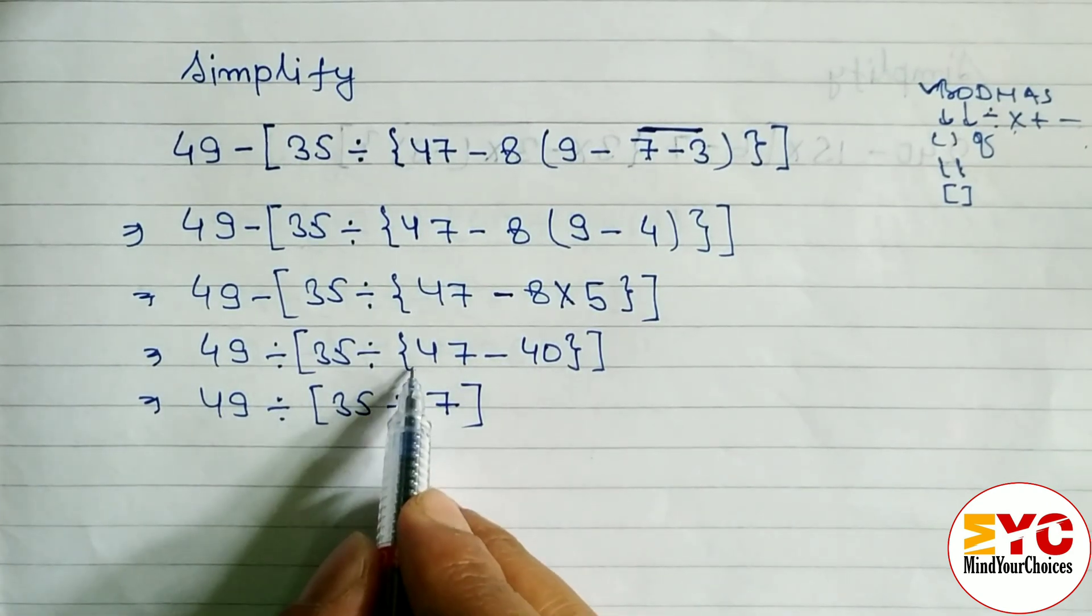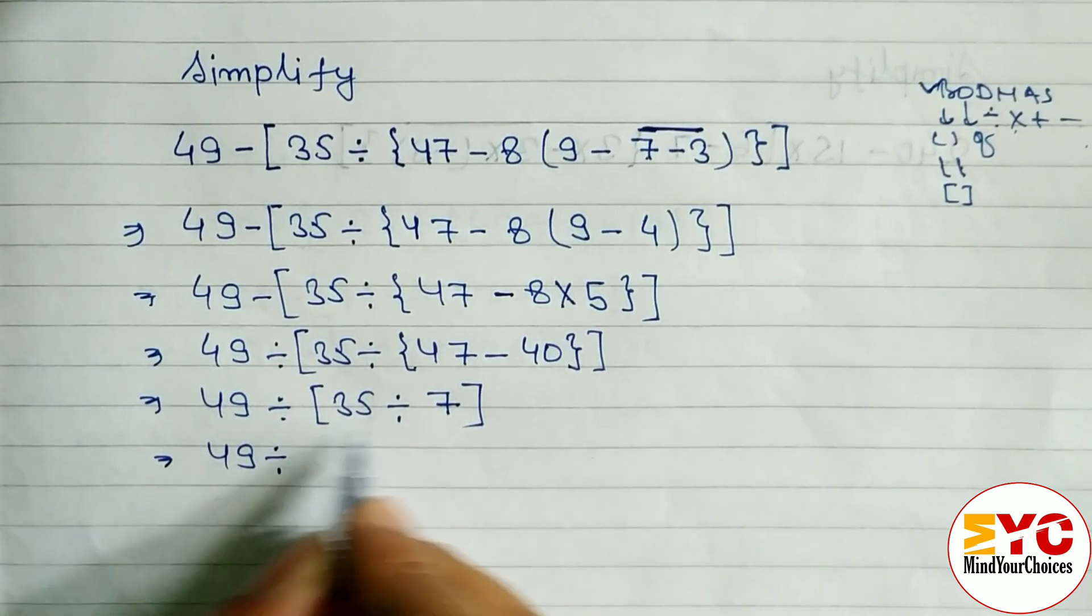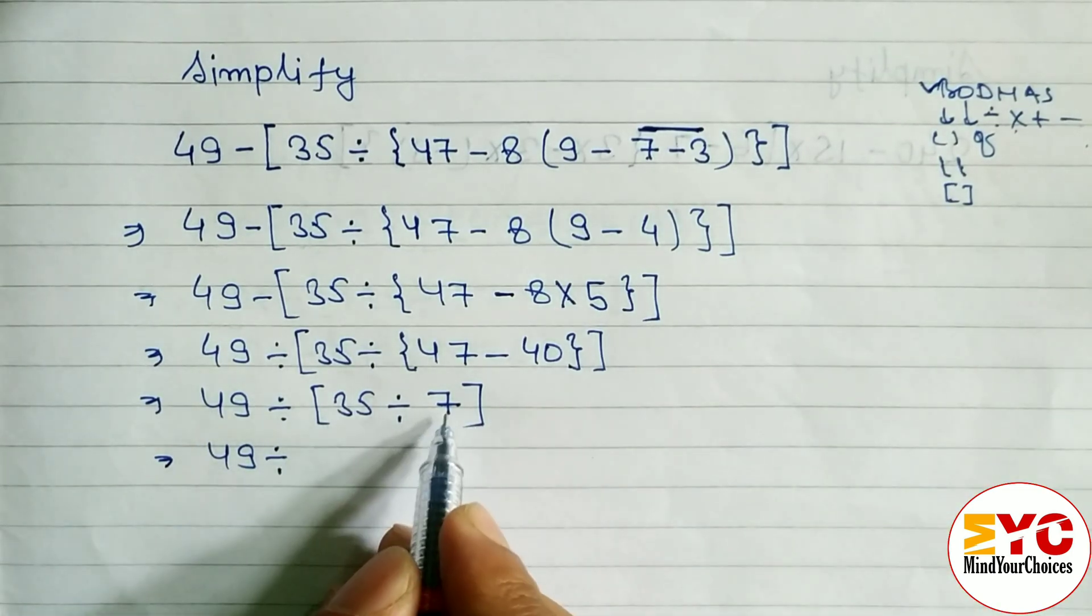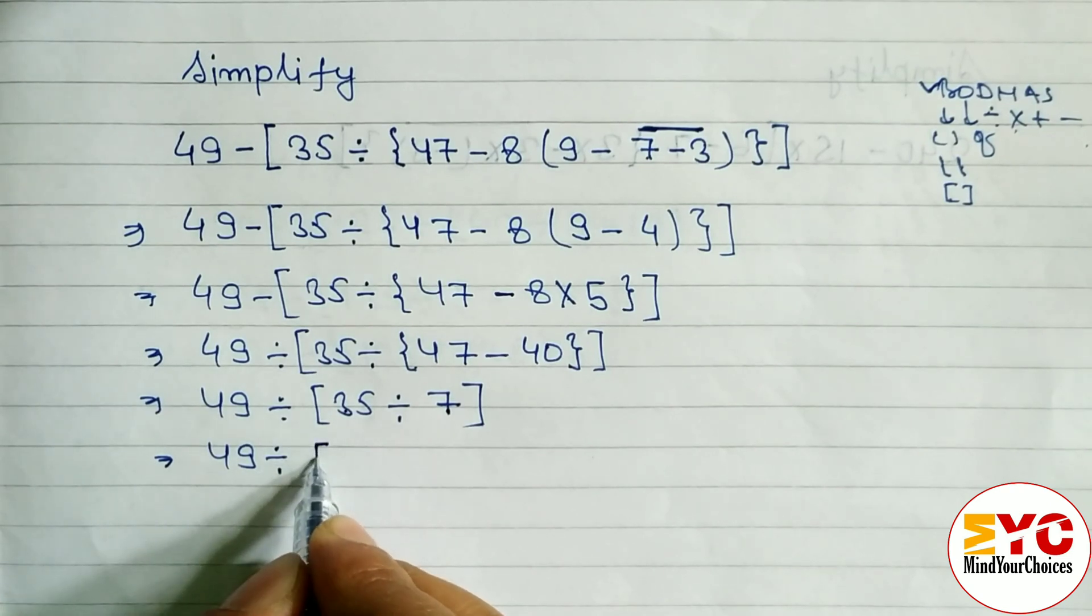After that, 49 divide, now we have to divide this. We have to use big bracket. So 35 divided by 7 we get 5, so we have to write here 5. Sorry, here is minus, so we have to write minus only, not division. Here is minus.